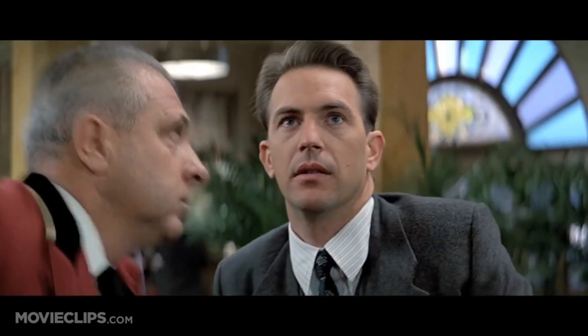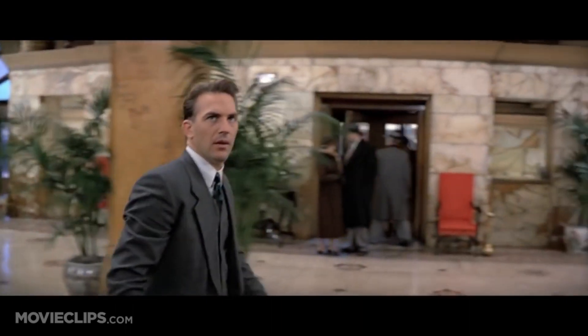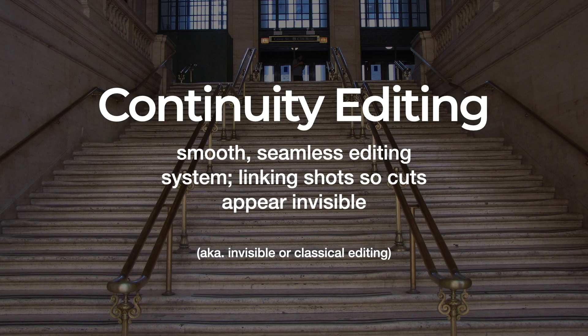Shot number five goes back to Costner and the lobby employee, and then Costner's character is going to complete his job. So we have five shots in this scene. They are joined together by a cut — an instantaneous change from one shot to the next. Hopefully you're noticing that these are very smooth edits. You are not paying attention to the edits themselves because you are paying attention to the characters and the narrative.